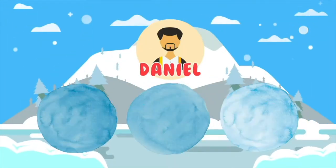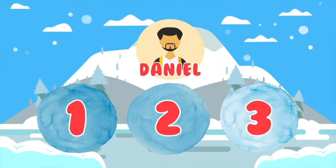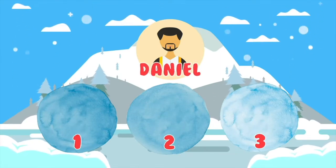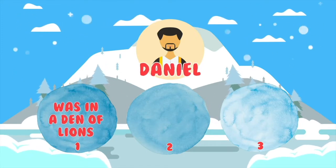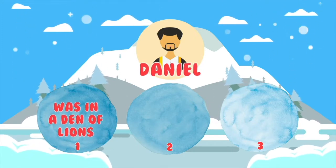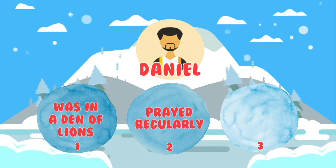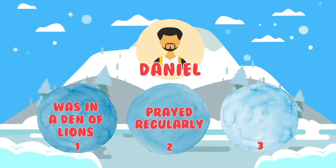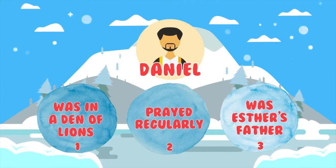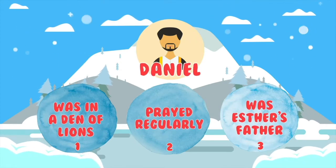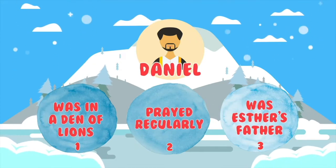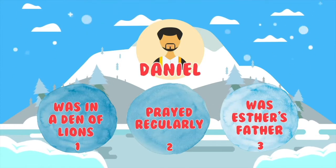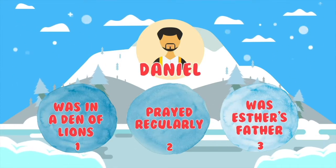Our first Bible character is Daniel. Which of these is not true about Daniel? One: Daniel spent a night in a den of lions. Two: Daniel prayed regularly. Three: Daniel was Esther's father. Remember, hold up one, two, or three fingers based on which snowball you think is not telling the truth.